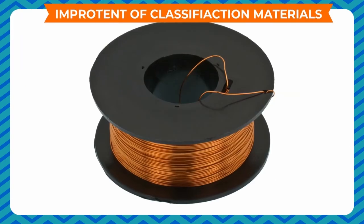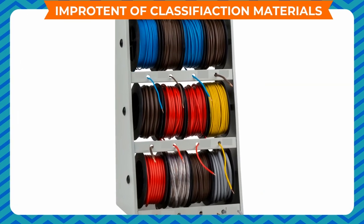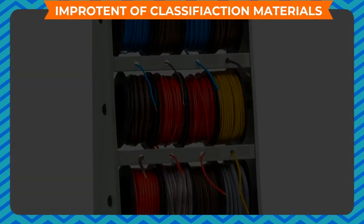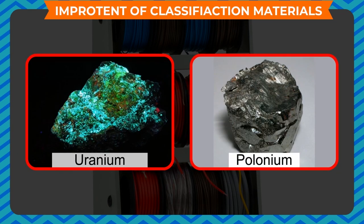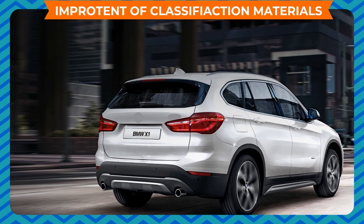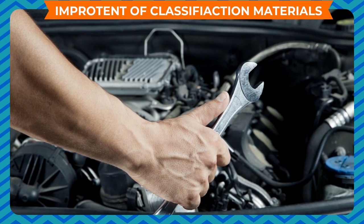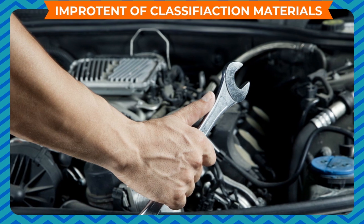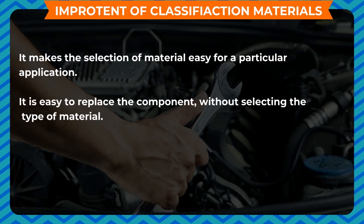Importance of classification of materials: different materials are used for different purposes — for example, copper and aluminium are used in making electric wires, plastics and wood are used for insulation, uranium and polonium are used in nuclear reactors, and petrol and diesel are used as fuel in automobiles. Classifying materials on the basis of their properties makes the selection of material easy. Benefits include: easy selection of material for a particular application, easy replacement of components, and better knowledge about the characteristics of different materials.